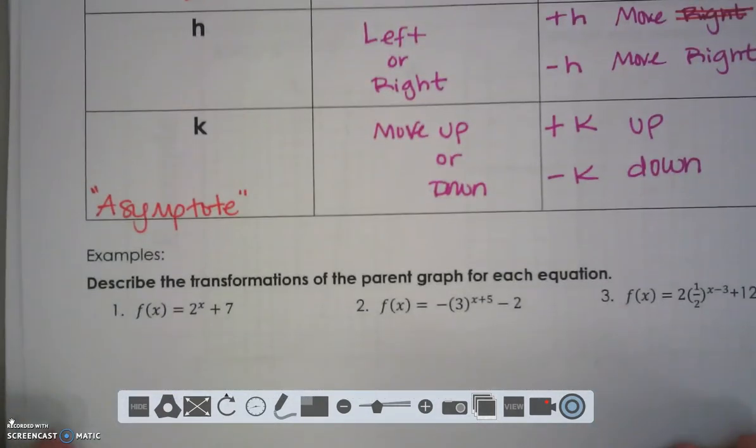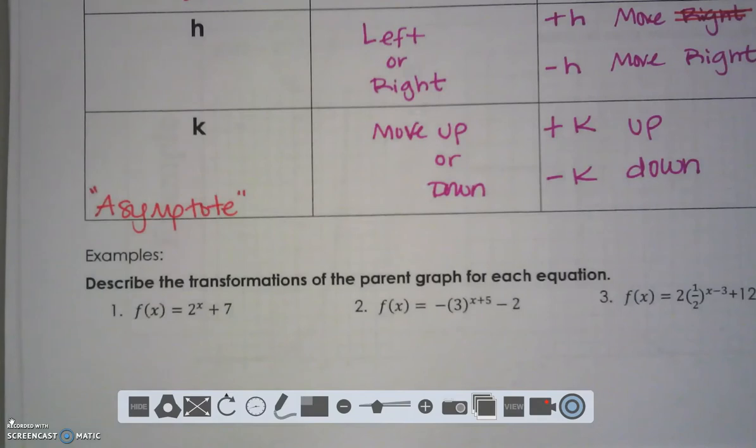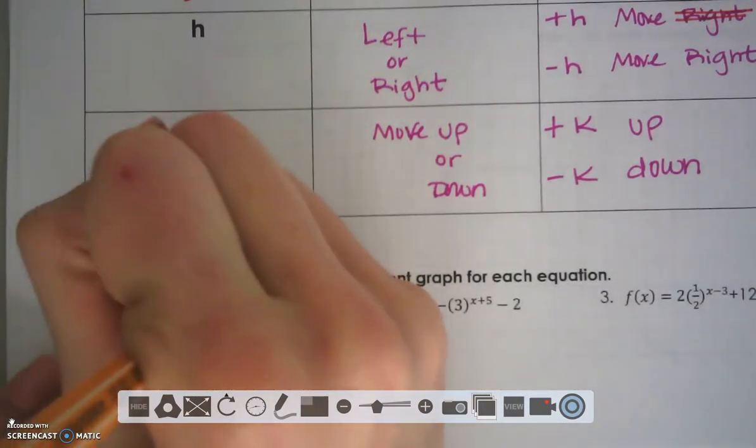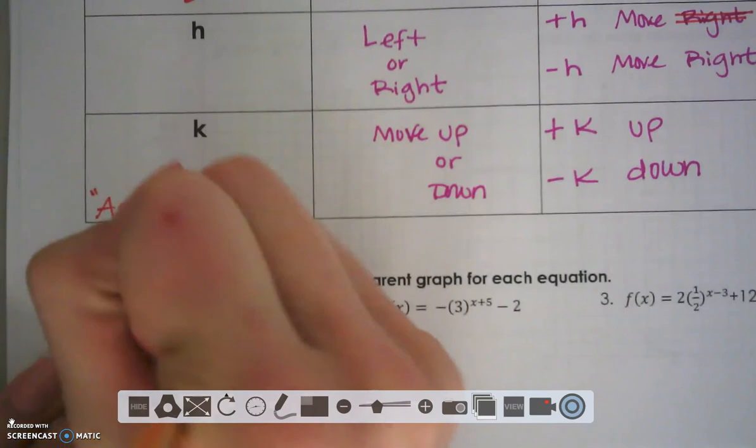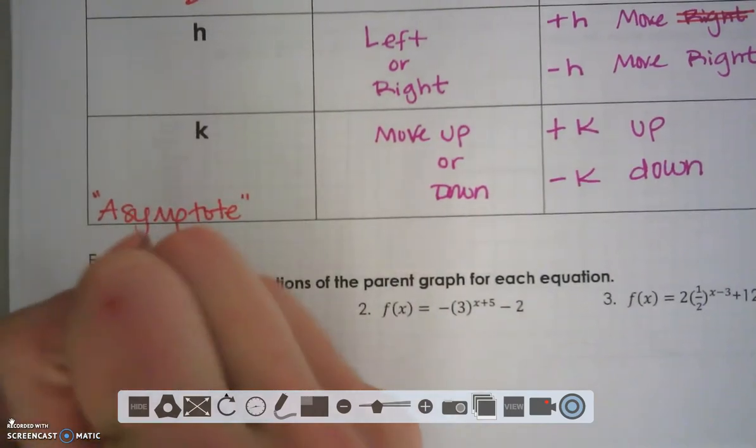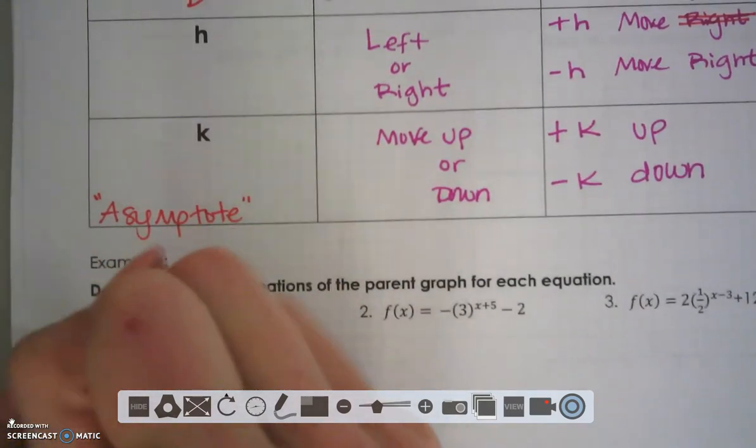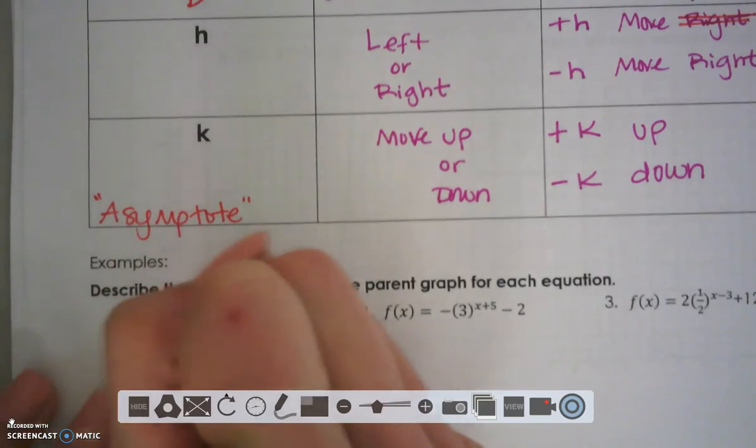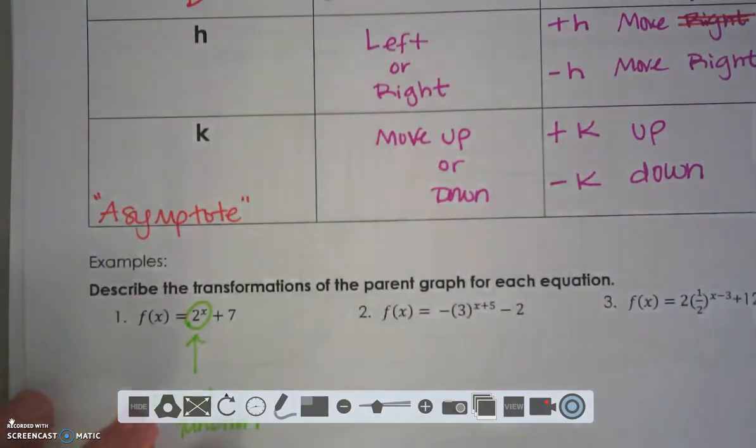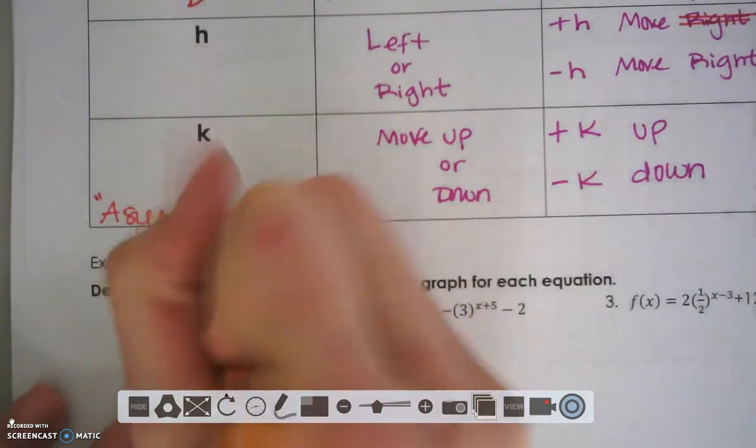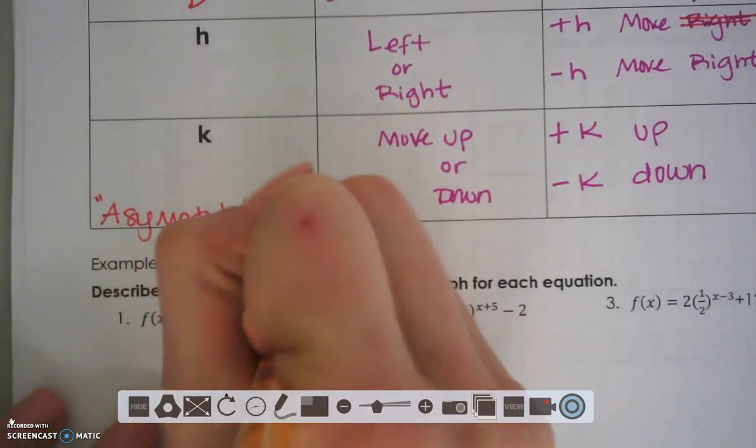Now let's practice some of these. I stated that your parent function is your base raised to an exponent. That makes this 2 to the X your parent function. Which means this plus 7 is on the outside. We're going up 7.